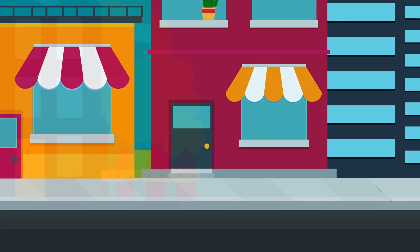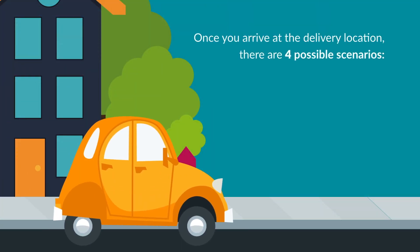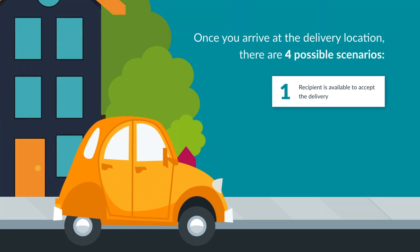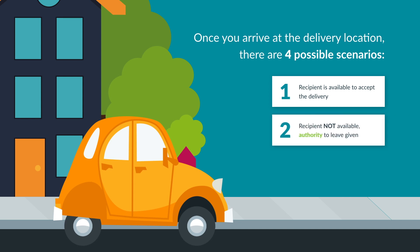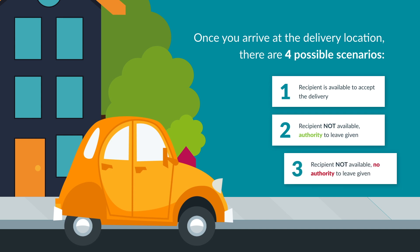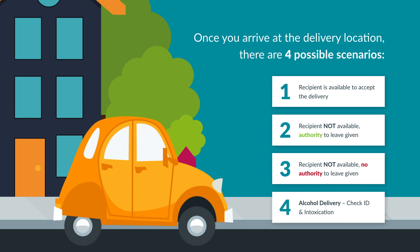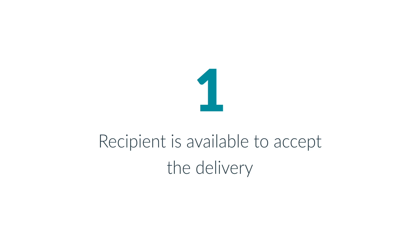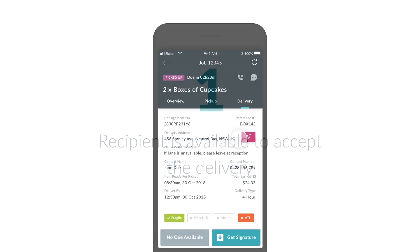When delivering jobs, there are four possible scenarios that could eventuate: one, the recipient is available to accept the delivery; two, the recipient is not available but authority to leave has been given; three, the recipient is not available and no authority to leave has been given; or four, an alcohol delivery where you need to check for ID and intoxication.